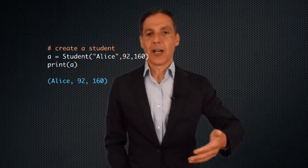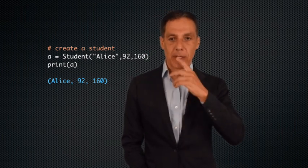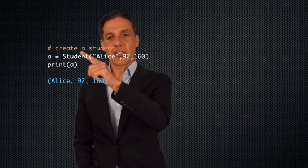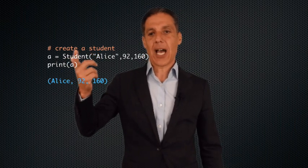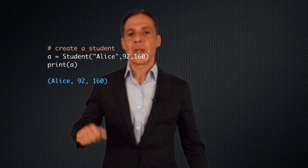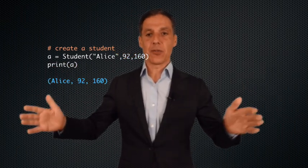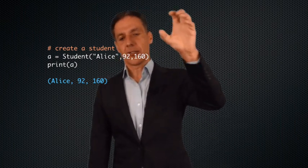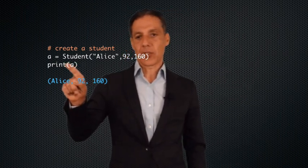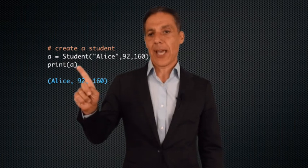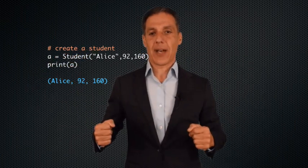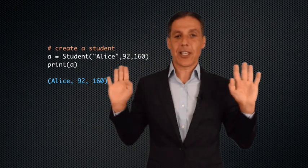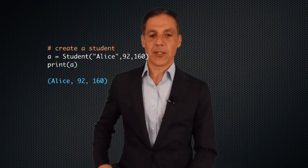So let's go through the practice of defining an object and doing a few things. I'm going to call the constructor for class Student — by convention, class names start with a capital letter. I pass in three values: Alice, 92, 160. The constructor builds an object and hands back the address, which I store in variable 'a'. When I call print(a), it calls the __str__ function we defined, and prints Alice, 92, 160 comma-delimited with parentheses. That's all I can do for now since the class has no other functionality yet.